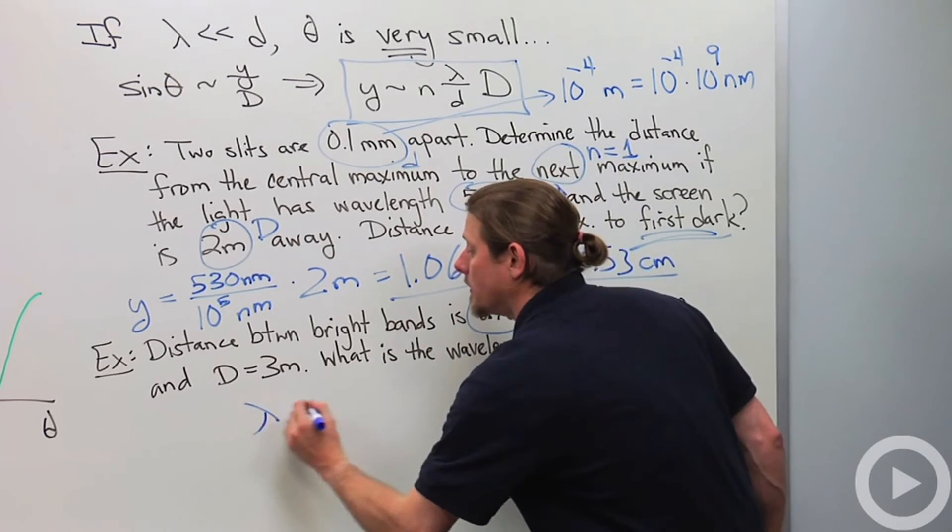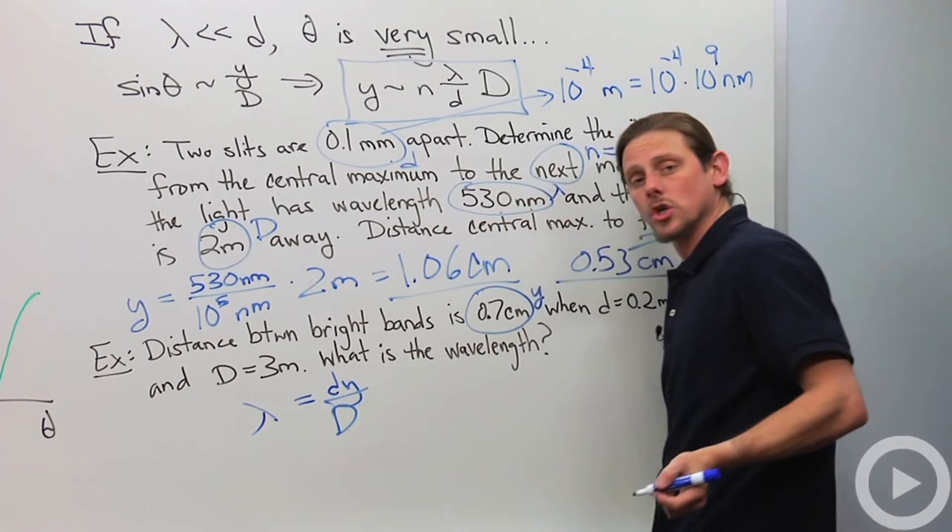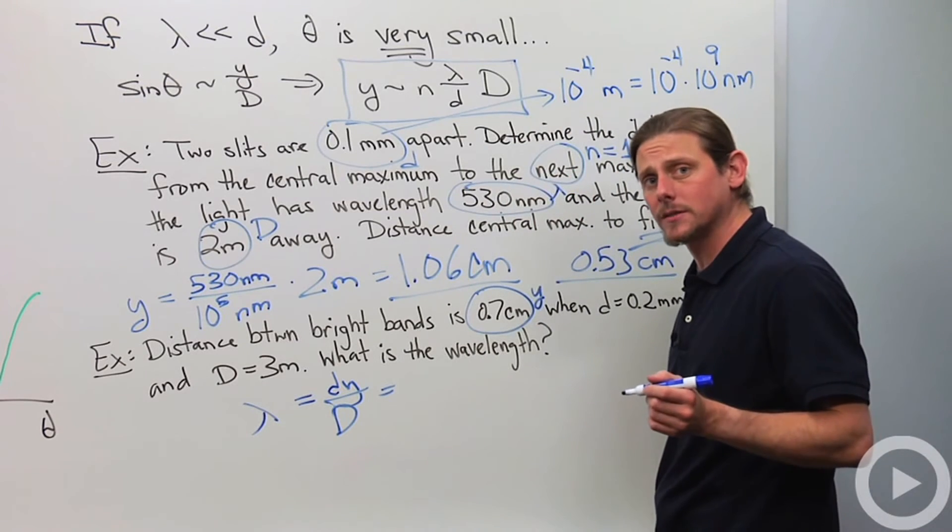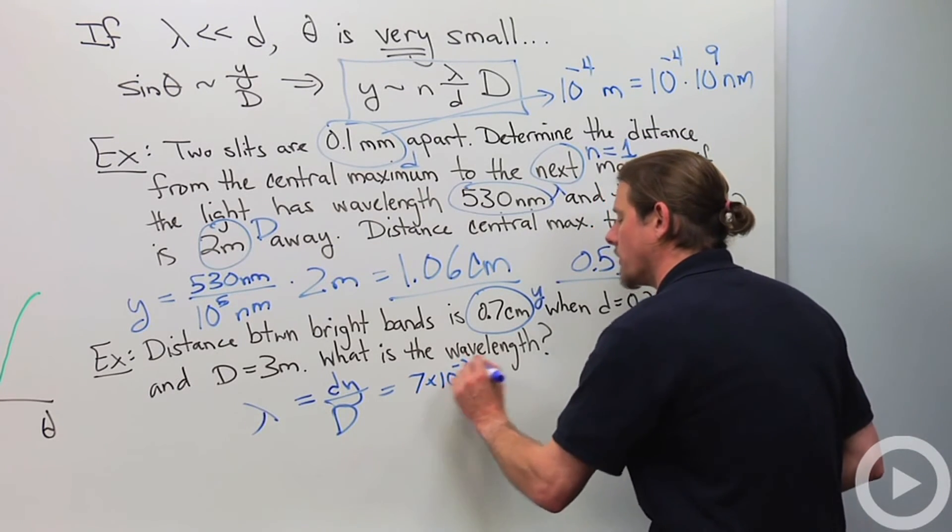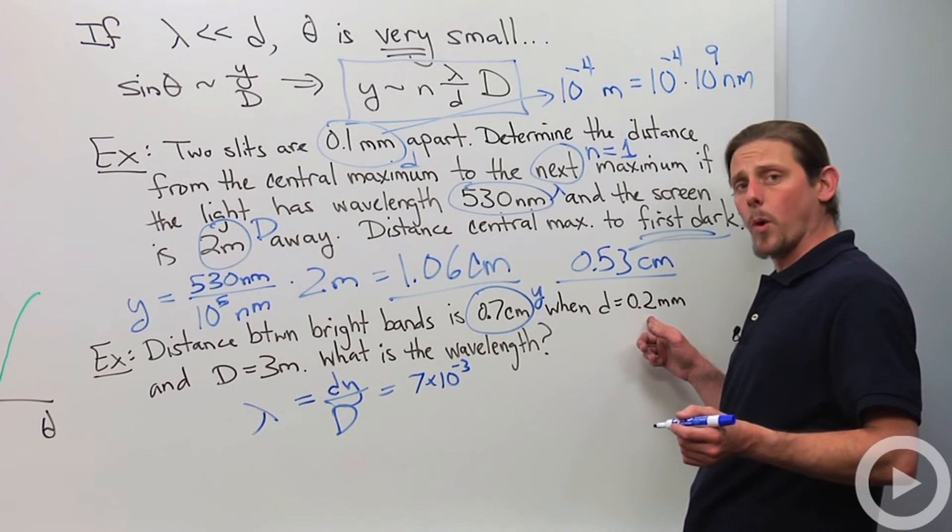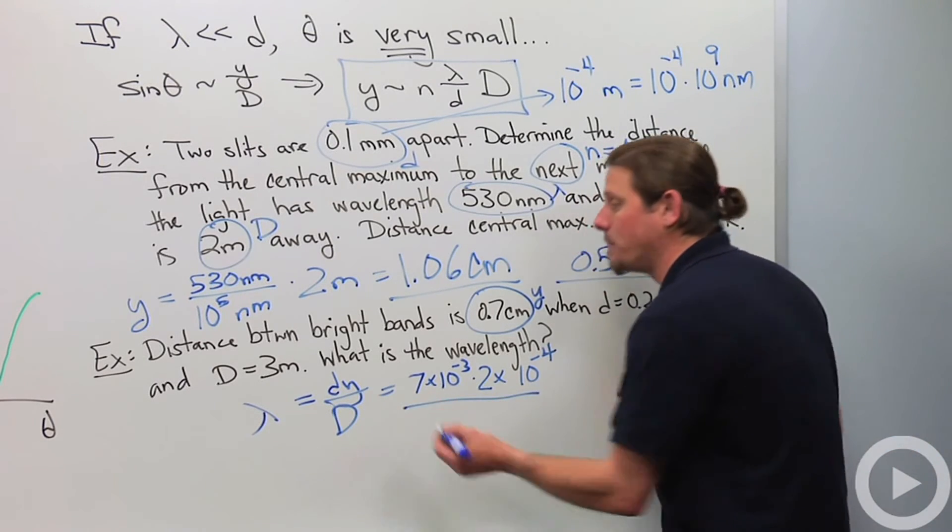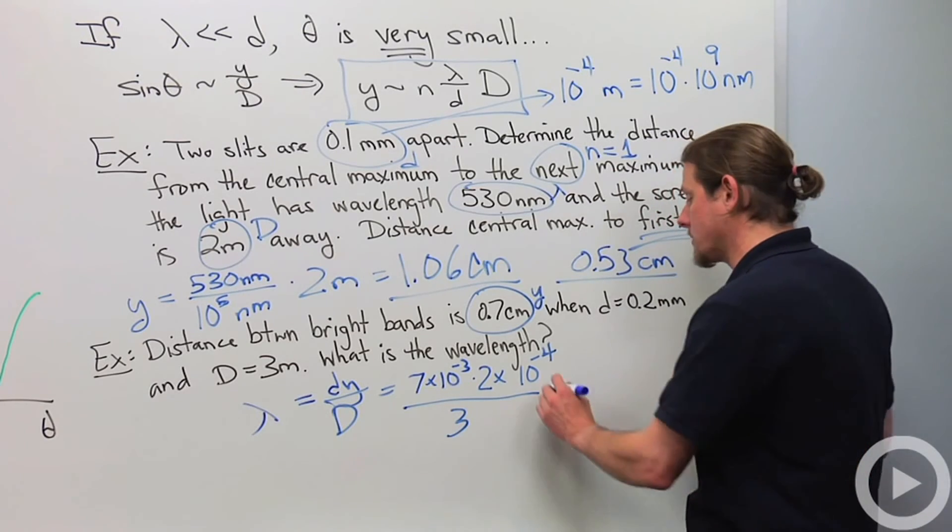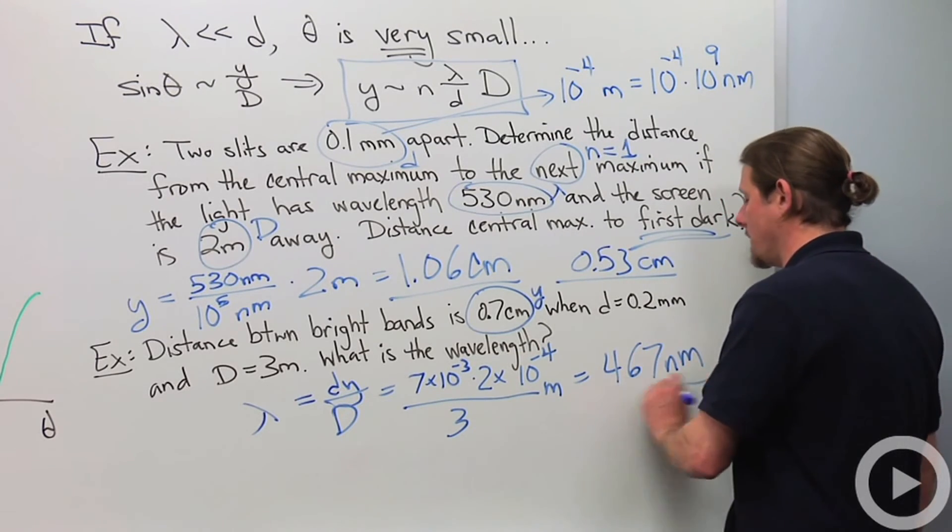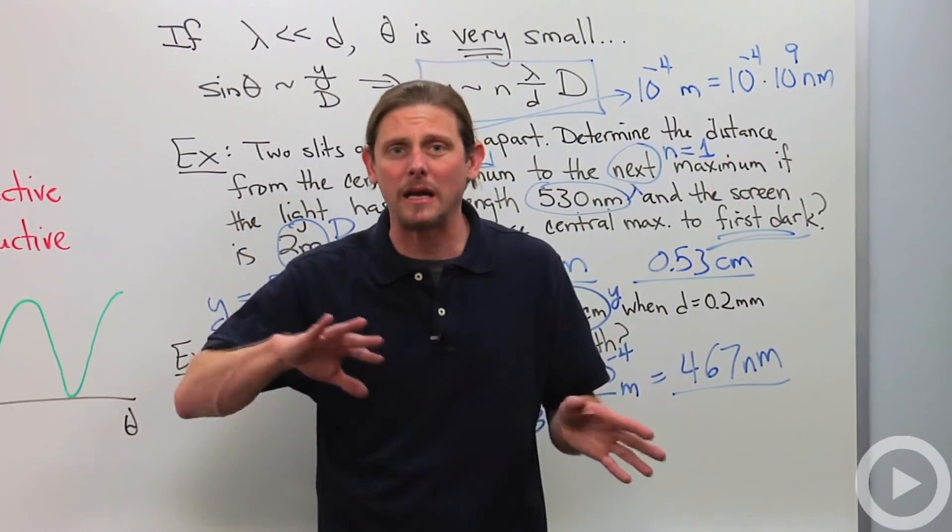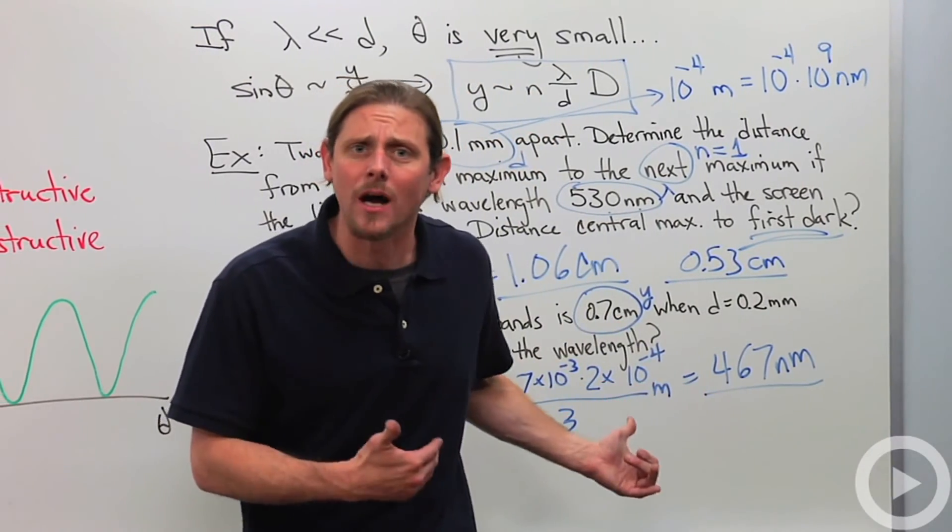So we'll say lambda is equal to d times y over capital D. Just like that. Again, I want to do everything in SI units. So I'll change this 0.7 centimeters to 7 times 10 to the minus 3. That's y. I'll change this 0.2 millimeters to 2 times 10 to the minus 4. So that's my d. And then I'll divide by capital D, which is 3. And this will be in meters. And if you do that math, you'll end up finding that it's 467 nanometers. So it's going to be a little bit of like a bluish green aquamarine color. More blue.